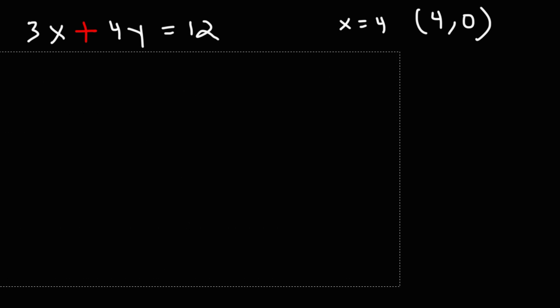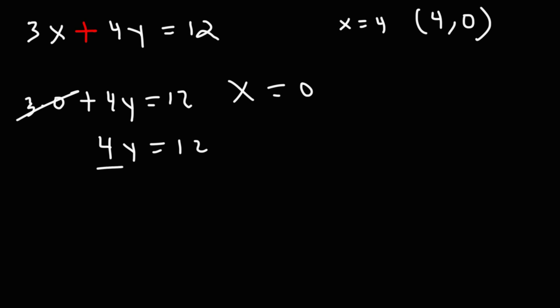Now, if we want to find the y intercept, we need to do the opposite. We need to set x equal to 0 and solve for y. So this disappears. We get 4y is equal to 12. Dividing both sides by 4, 12 divided by 4 is 3. So the y intercept is 3, or we get the point 0, 3. This is our x value. This is the y value.